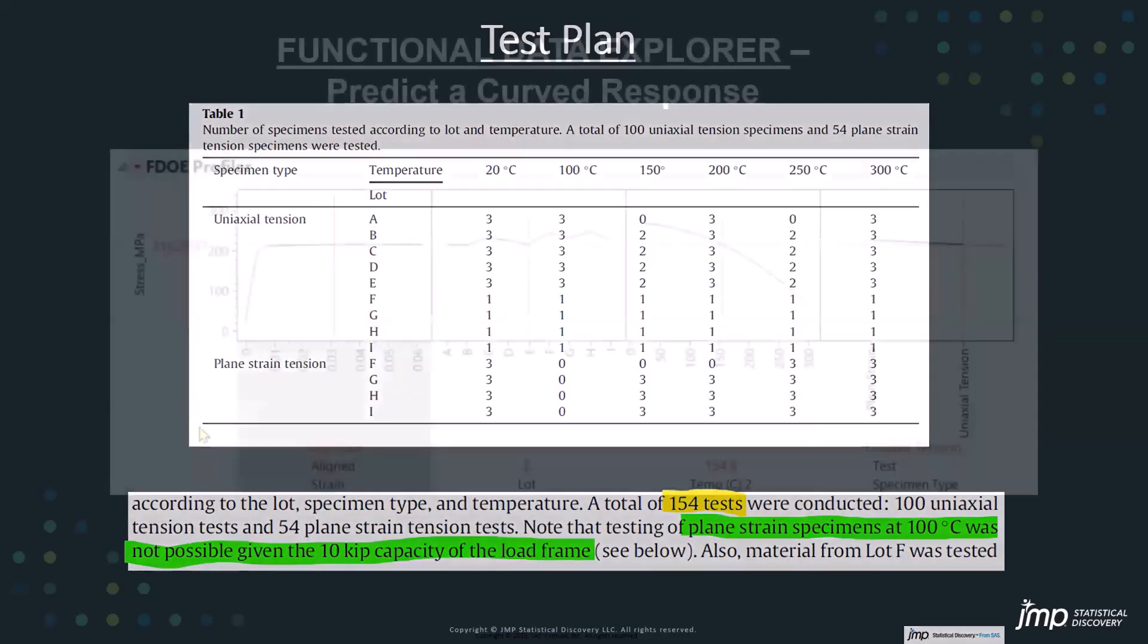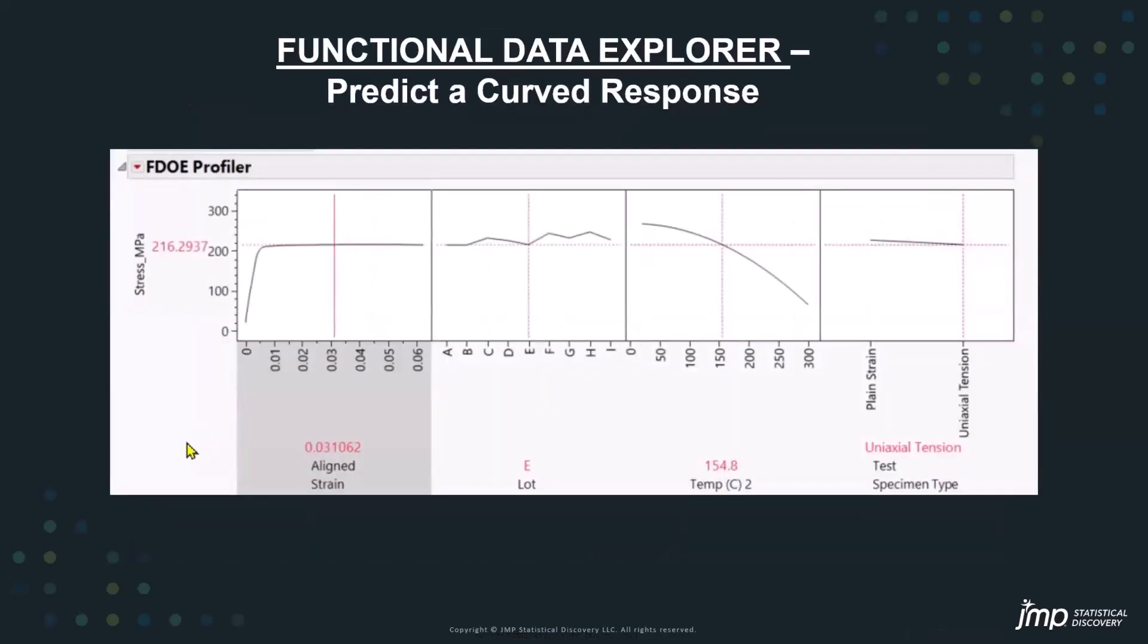But where we're going to end up with their data is right here, FDOE profiler. We have our stress versus strain. We have our stress strain curve. So we could explore lot to lot or manufacturer to manufacturer variation, or maybe we go over and look at the samples. How different are they? In the paper, they mentioned they were investigating both of those. And of course, temperature. That's the money X factor.